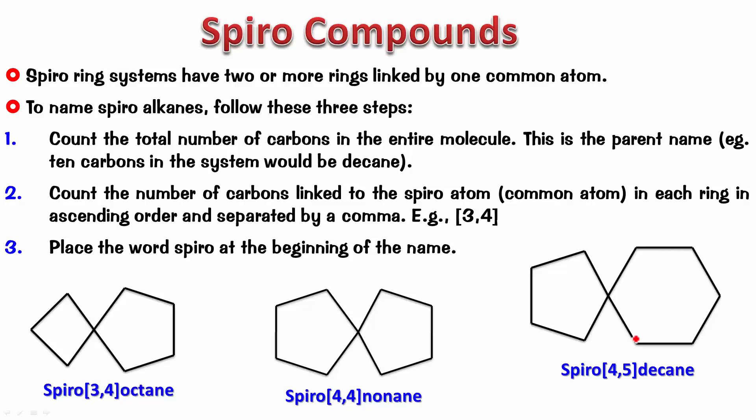Now, how do we do the numbering? The numbering is very crucial here. We must understand how the numbering is done. The numbering is done in the following way. Suppose I have a five-membered ring, a six-membered ring. We must always start with, this is the spiro atom, right?